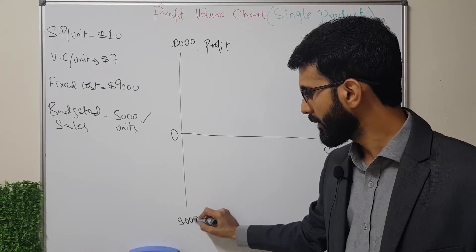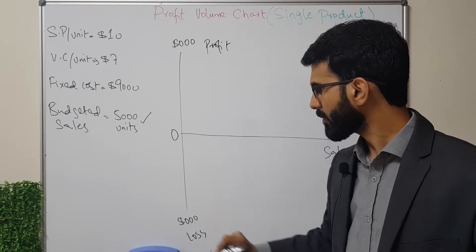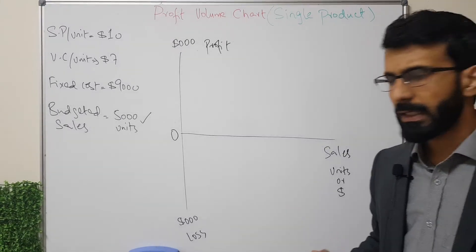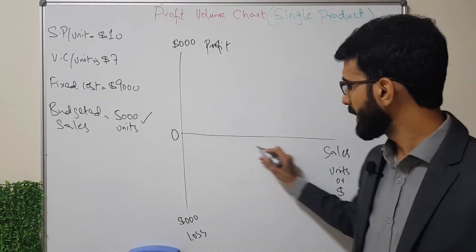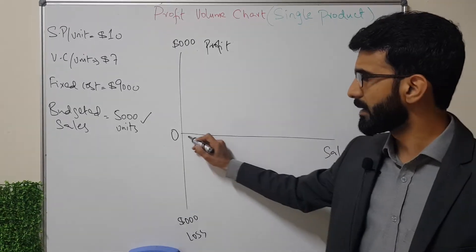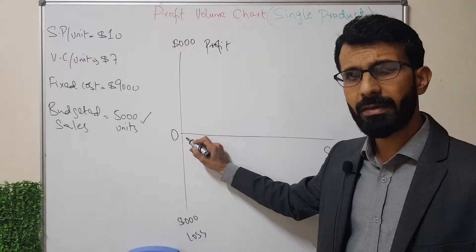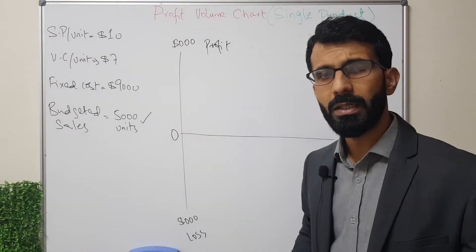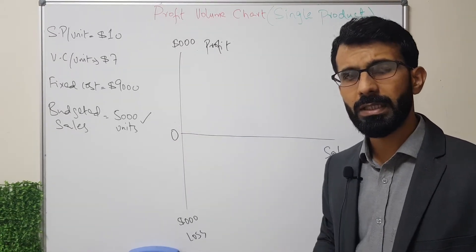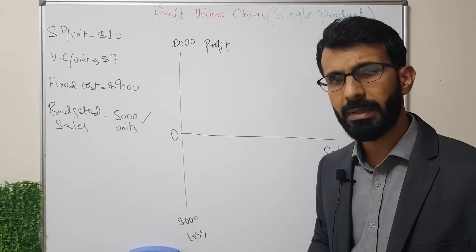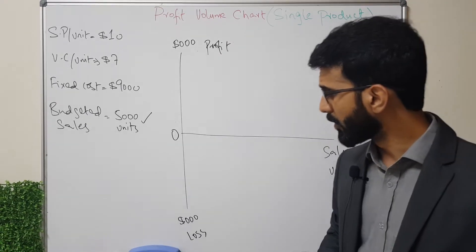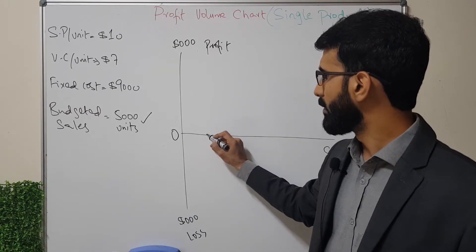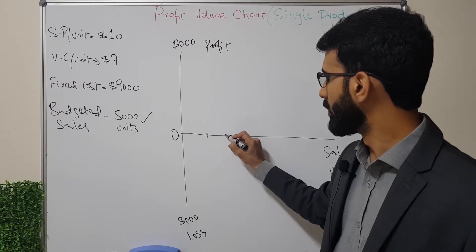As stated earlier, if the volume of production and sales is zero, we will have a loss exactly equal to our fixed cost, because the contribution at that point is zero.